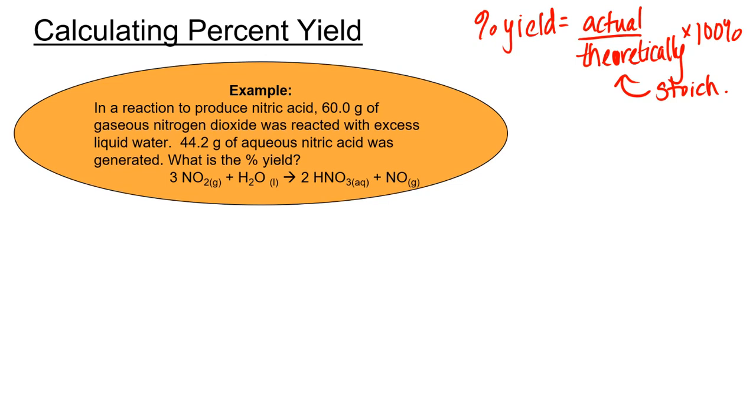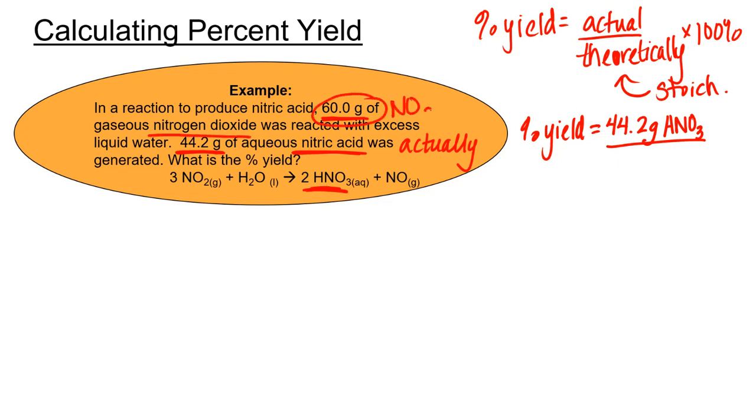In a reaction to produce nitric acid, 60 grams of gaseous nitrogen dioxide was reacted with aqueous liquid water. 44.2 grams of nitric acid was generated. That was actually generated. So let's see where we're headed with our percent yield equation. 44.2 grams of nitric acid, HNO₃. We don't know how much we could actually have made. We know we had 60 grams of nitrogen dioxide, NO₂. We're not sure how much nitric acid that should have given us, but we can calculate that from stoichiometry.